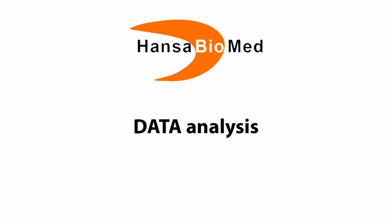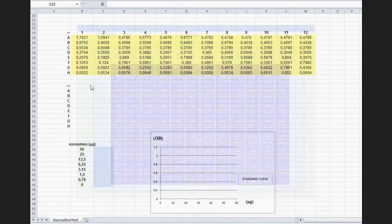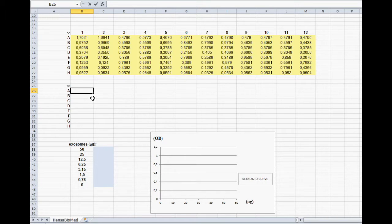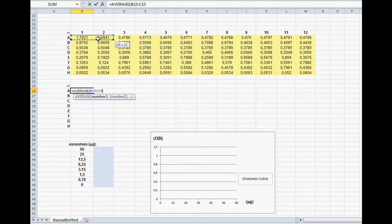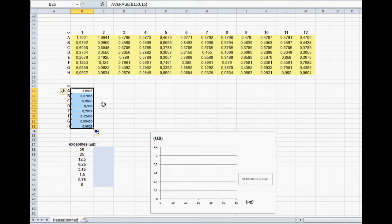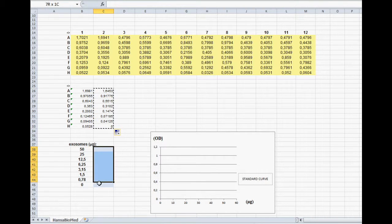Data analysis. Collect the data and copy to Excel. Calculate the average absorbance for all parallel standards. The values of the negative controls must be subtracted from all values. Make a standard curve.